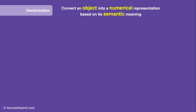It's much easier to compare two numbers rather than comparing two pieces of text, images, audio, or video. So the idea here is to first convert these objects into numbers. Once we have the numerical representation of these objects, we can compare them and identify if they are related to each other or not.